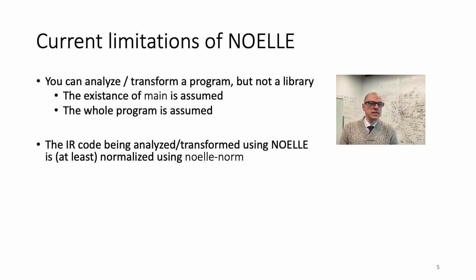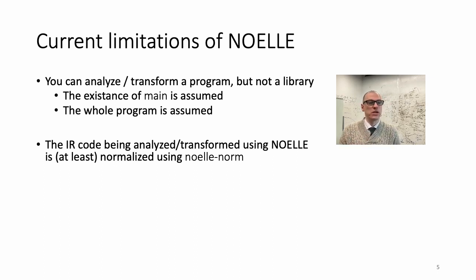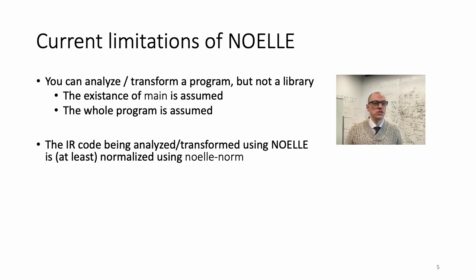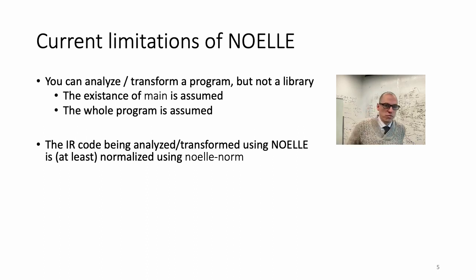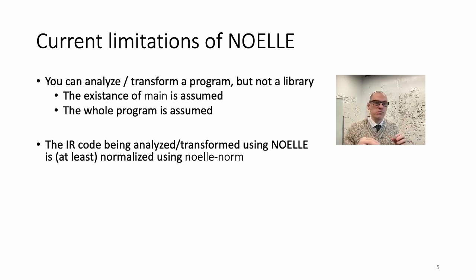The IR is analyzed and transformed using NOEL when you ask NOEL for a certain dependence-centric abstraction or want to use a dependence-centric API to transform the code. But when you do that, NOEL assumes your IR is normalized. NOEL provides several normalizations — the least invasive one is NOEL norm. At the very least, you have to take the IR generated by the frontend — for example Clang or Rust — and normalize it with the command line NOEL norm before you invoke the pass you built on top of LLVM that depends on the NOEL infrastructure.